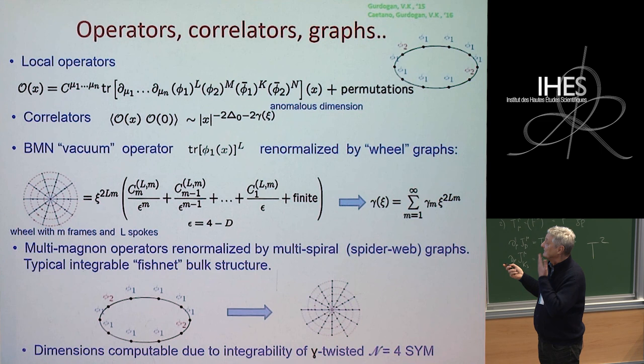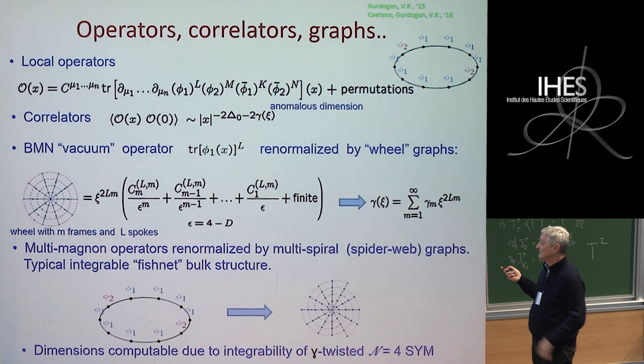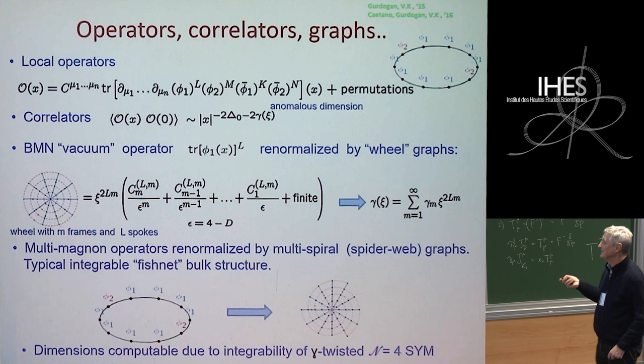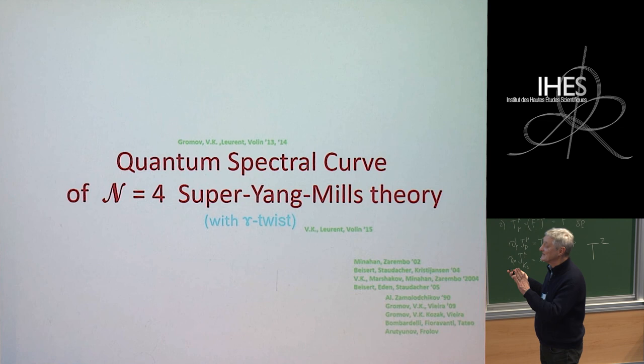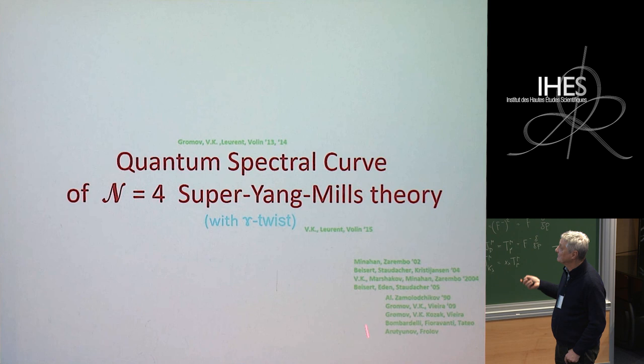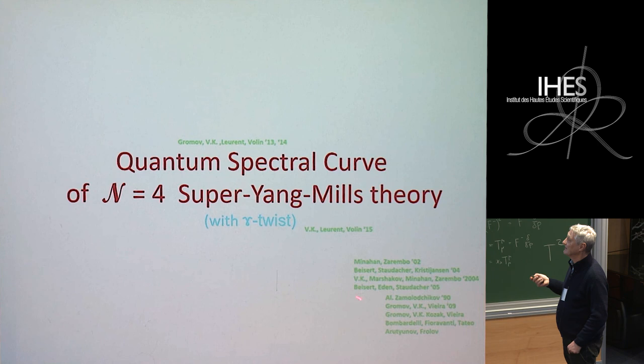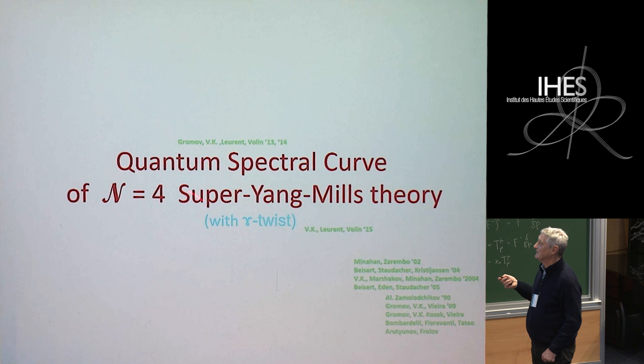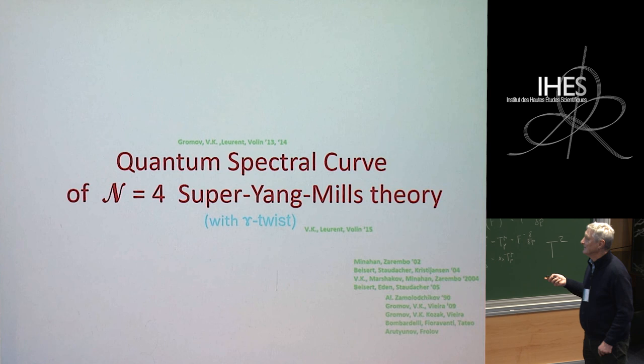I want to take a little time to remind you of the general integrability result for the spectrum of anomalous dimensions in N=4 super Yang-Mills, because in my opinion it only takes two transparencies to explain. So this is about the quantum spectral curve — the method we developed after a long development of integrability in N=4 Yang-Mills and AdS/CFT. The final method is called the quantum spectral curve, including the gamma twist.